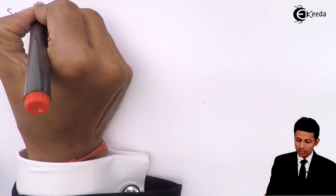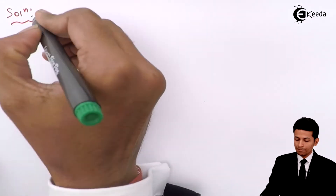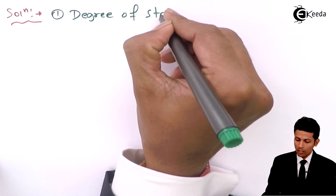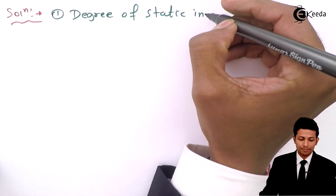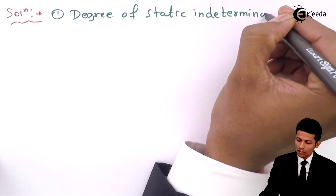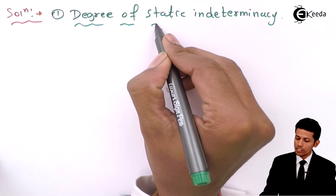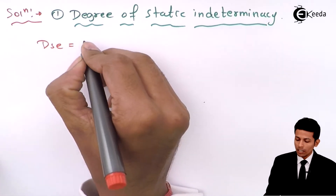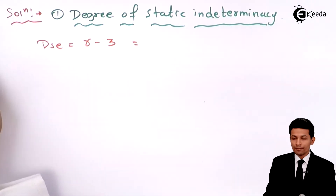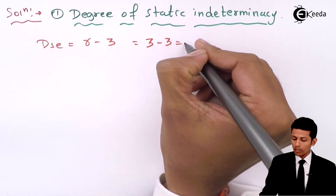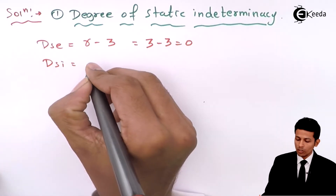Let's start the solution. The first step is to check the degree of static indeterminacy. We check DSE, which is r minus 3. Here r equals 2 plus 1, giving 3 minus 3 equal to zero.